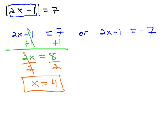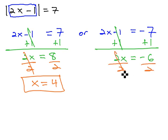Similarly, we can solve the other equation, again by adding 1 to both sides, giving us 2x equals negative 6, and finally dividing both sides by 2 to get x is equal to negative 3.